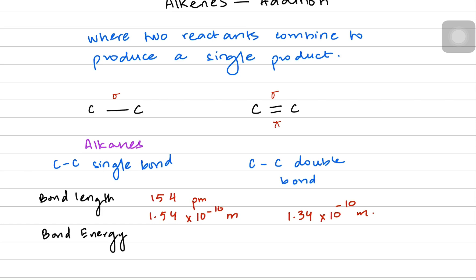When you compare the carbon-carbon double bond, it is 1.34 × 10⁻¹⁰ meters — so the double bond is shorter. You might think it's stronger because shorter bonds are stronger. Looking at bond energy values: the carbon-carbon single bond has an energy value of 348 kJ/mol, while the carbon-carbon double bond has a value of 614 kJ/mol, so the double bond is indeed stronger overall.